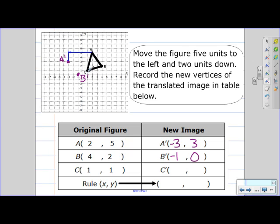And then for C, same process. One, two, three, four, five, and two down, one, two. And so here is C prime and it's at negative four, negative one.